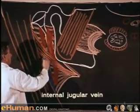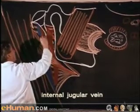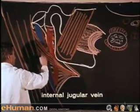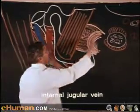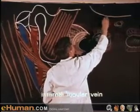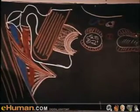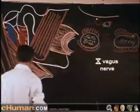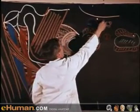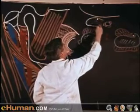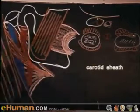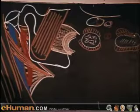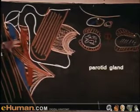Having passed up deep to the posterior belly of the digastric, the internal jugular vein overlaps the internal carotid in this region. Whenever you think of the internal jugular vein and the carotid arteries, you should think of the vagus nerve — so here we have the carotid sheath enclosing these structures.